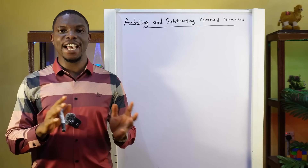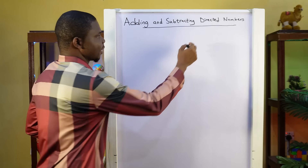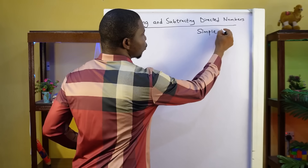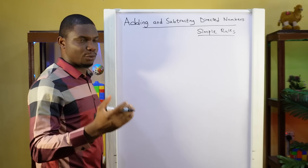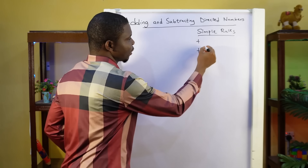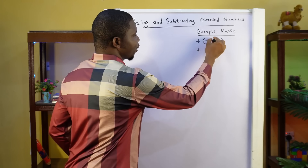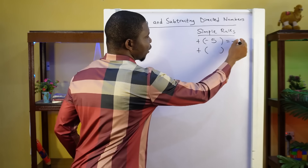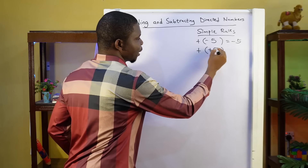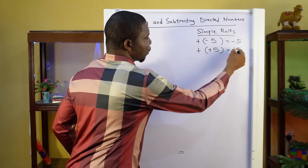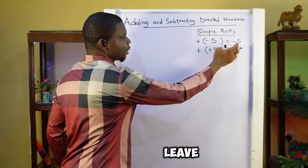The first thing you need to know when adding and subtracting directed numbers is some simple rules. The first rule is how to open brackets. So if you are adding, the sign inside the brackets remains the same. So if we have minus 5, opening these brackets, we simply have minus 5 — the sign remains the same. If it is plus 5 inside the bracket, when you open the bracket it will still be plus 5. When adding, to open the brackets, you simply leave the signs the same.